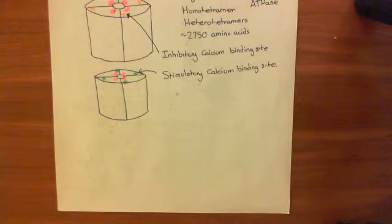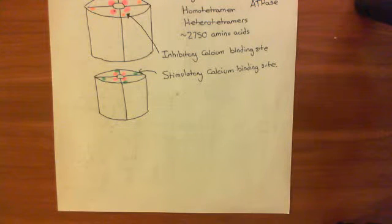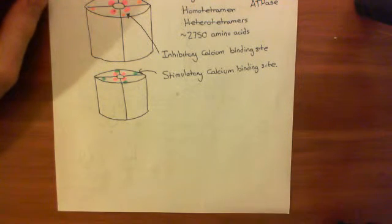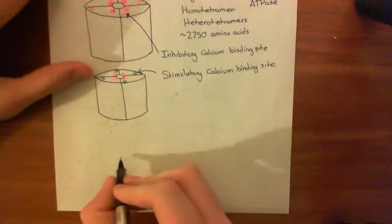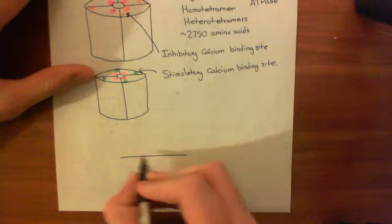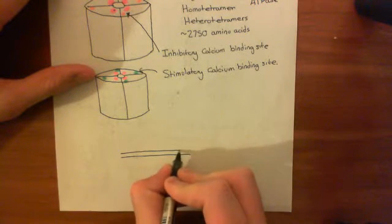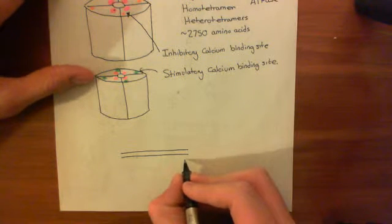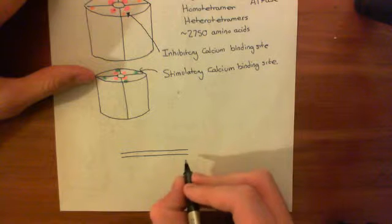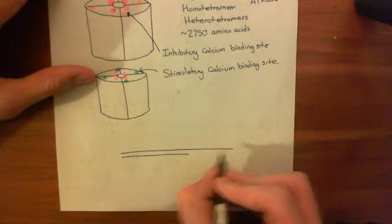How do we solve this problem? Well, we need to bring calcium back in from the extracellular fluid back into the ER lumen. The way we start this is that we need a protein in the ER membrane to detect that calcium is too low. There is such a protein in the ER membrane, and this protein is known as STIM1, which stands for stromal interaction molecule 1.